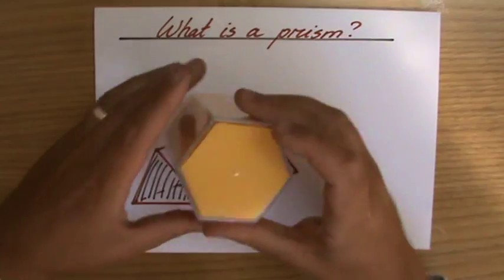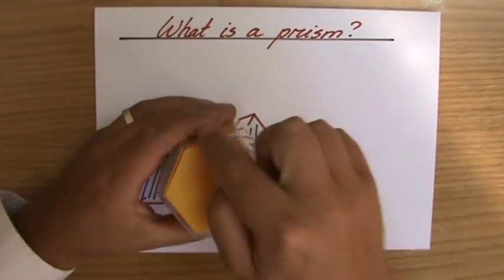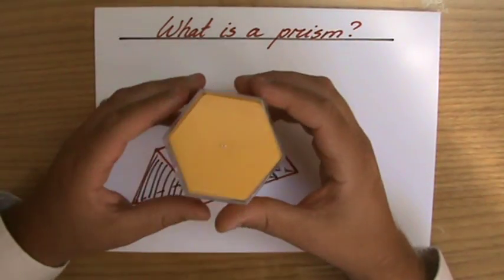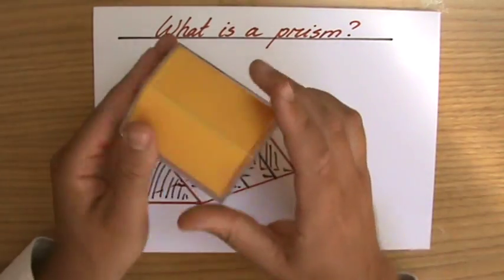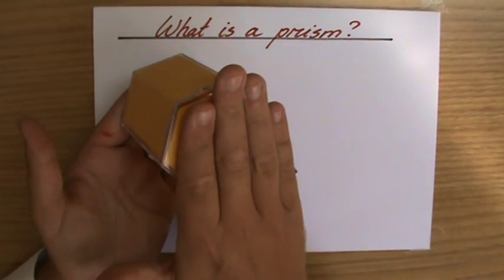And I have another one here. Look, it has one, two, three, four, five, six. So, it's a hexagonal prism, if you like. And I have a hexagon here, parallel to another identical hexagon there.